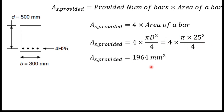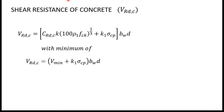Next, we find the shear resistance of concrete, VRdc. There are two equations: the main equation and a minimum value equation. We calculate the top value first, then the minimum value, and VRdc must not be less than the minimum value.